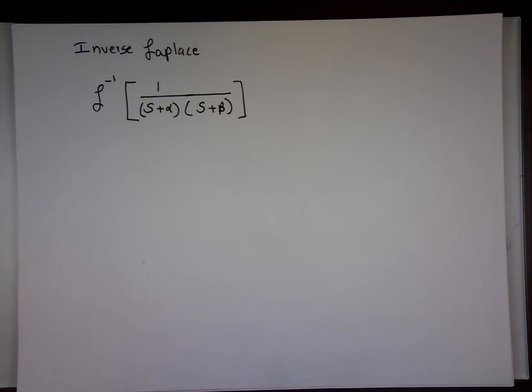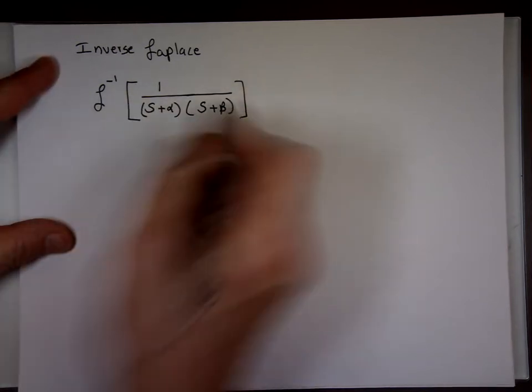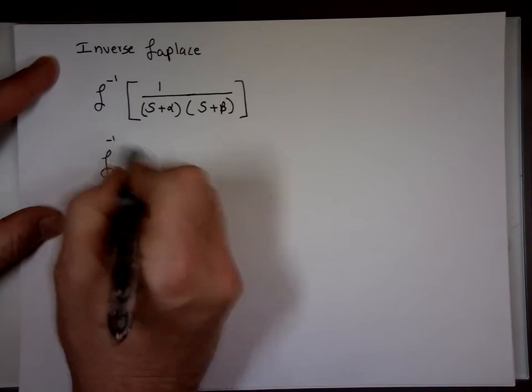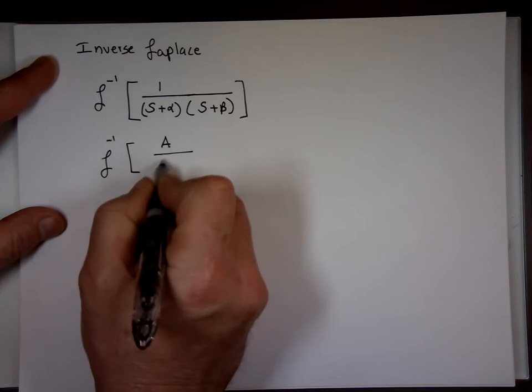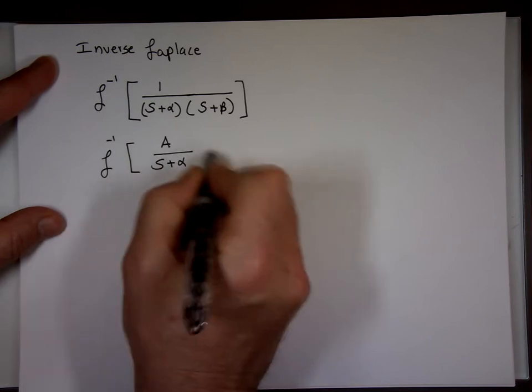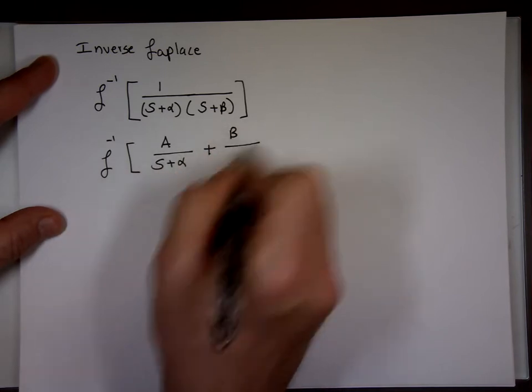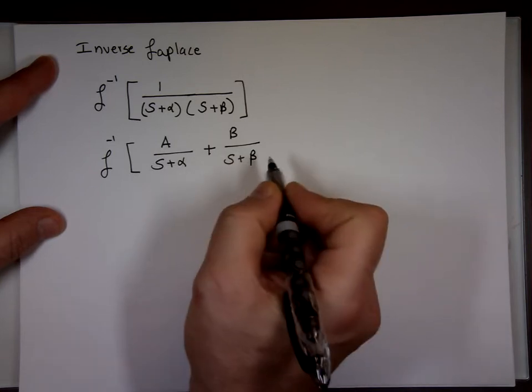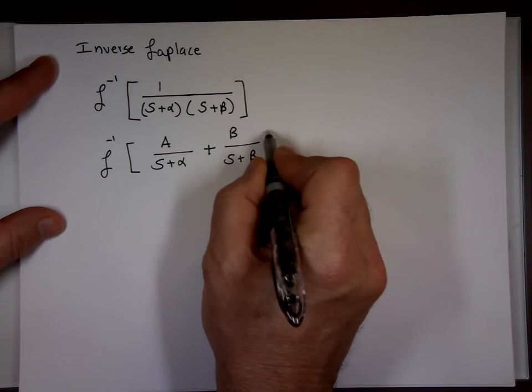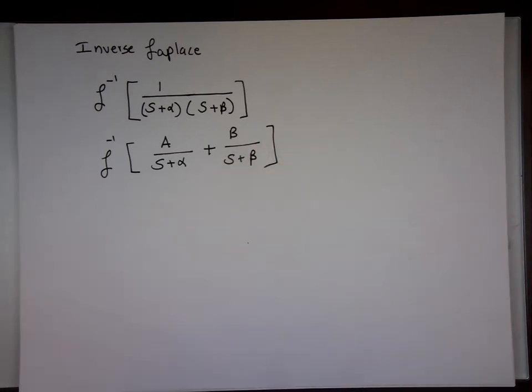If you want to find the inverse Laplace of 1 over (S+α)(S+β), you can rewrite this algebraically. You can break it down to some constant, we call it A over S+α plus B over S+β. Maybe I shouldn't use α and β. Let's call it K1, K2 so you're not confused.